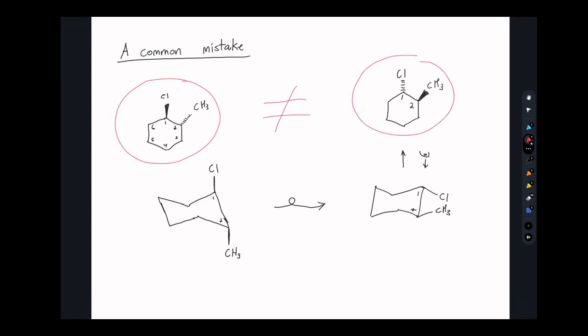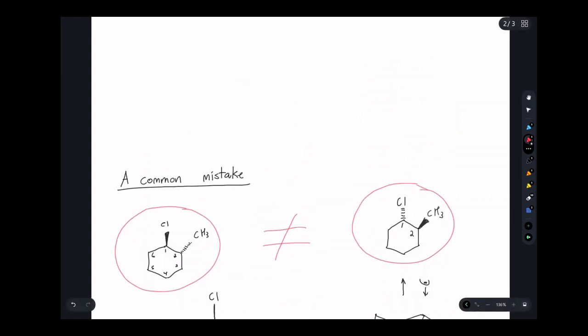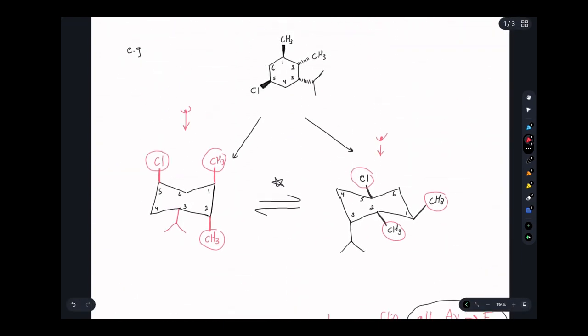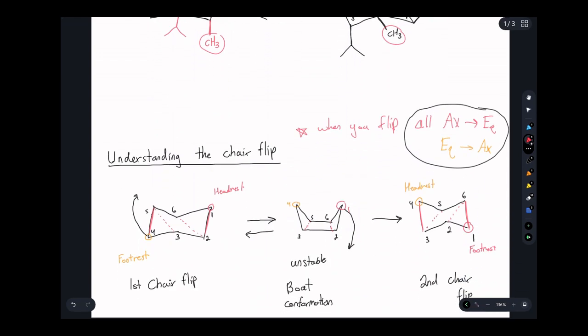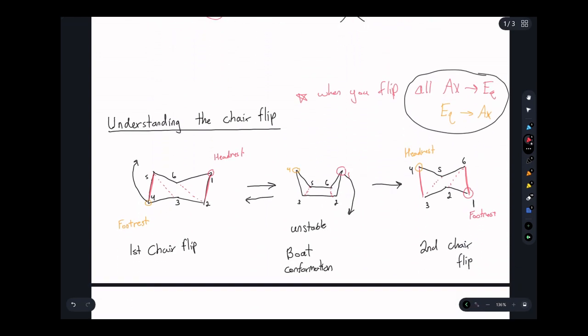More specifically, these are a type of stereoisomer, which we'll cover in the next unit. But for now, just be aware that these aren't the same. Looking up at the original example that we used, remember that the flat projection must directly correlate to both structures in terms of the wedges and the dashes. So to solve and to avoid that issue, make sure that you change the numbering of your carbons or imagine this headrest and footrest idea when you do a chair flip.